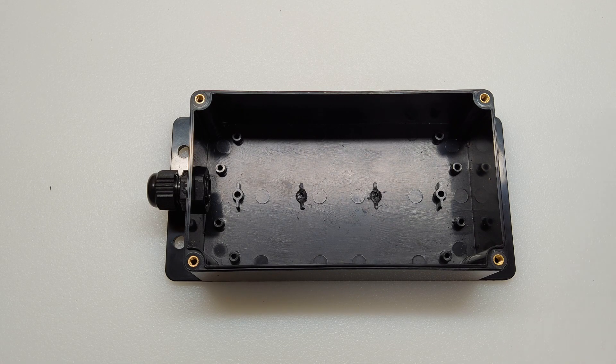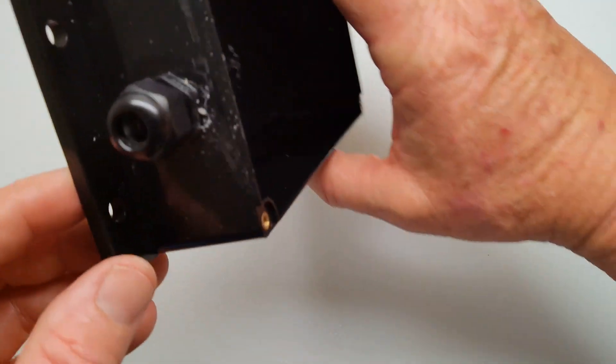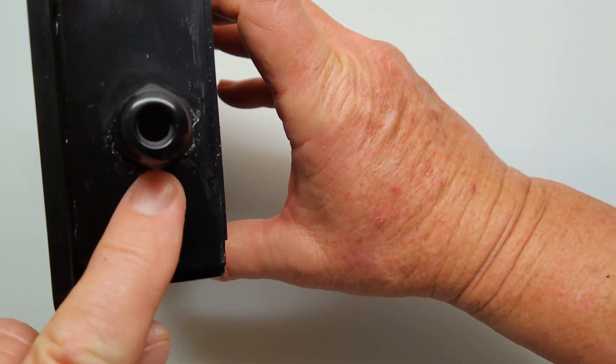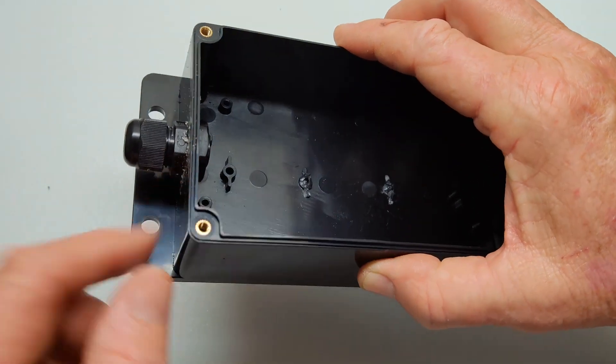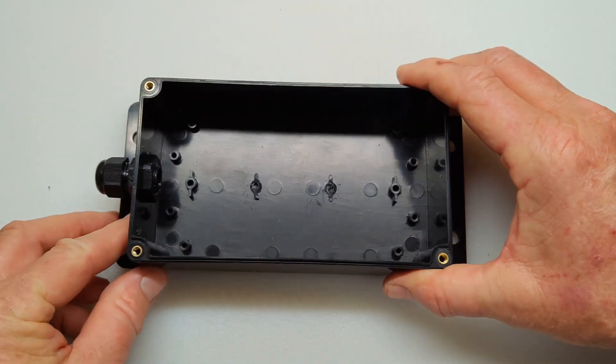Now the last thing I did to the box was drill a hole on this end for the gland nut so I can run my wiring through there. And then I also used some marine goop just to make sure everything is sealed.